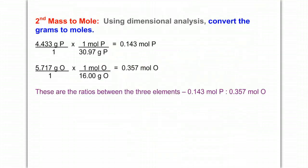These are the grams of my two individual compounds. I'm going to take those masses we just determined and change them to moles. I'm going to get the molar mass from the periodic table for each, divide, and get my ratio: 0.143 moles of phosphorus to 0.357 moles of oxygen.